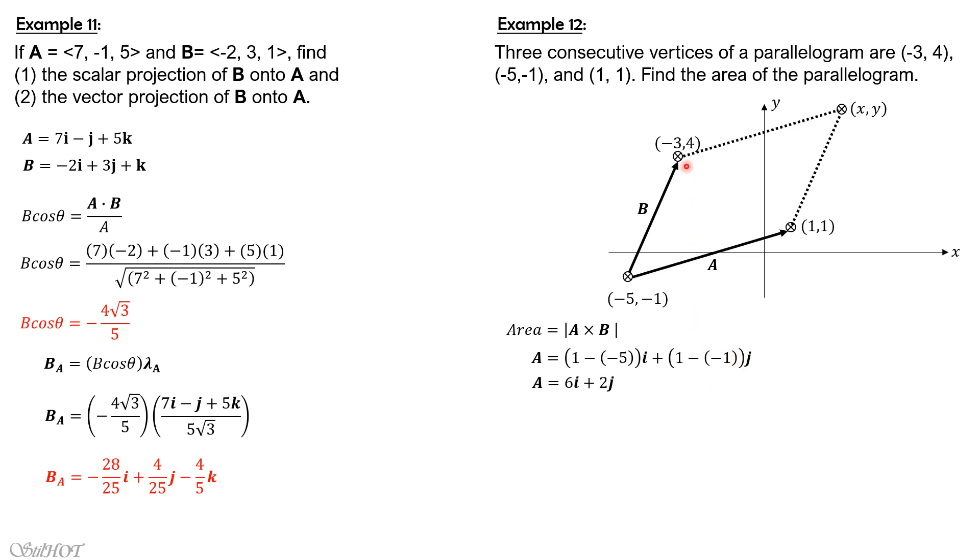While vector b is (-3 - (-5))i plus (4 - (-1))j, so it is equal to 2i plus 5j.